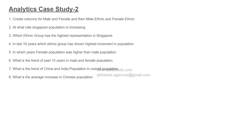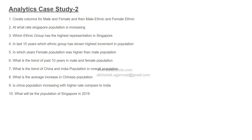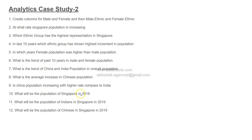What is the average increase in Chinese population? Is the Chinese population increasing at a higher rate compared to Indians in Singapore? If so, find the observation. Then the forecasting question: what will be the population of Singapore in 2019? The data is only available up to 2018, so you need to put some sort of algorithm to predict that. Similarly, what will be the population of Indians in 2019 and what will be the population of Chinese in Singapore in 2019? These help us validate based on the previous questions, and you can see the interest is more on identifying how these two ethnic groups are increasing and what their contribution in Singapore is.